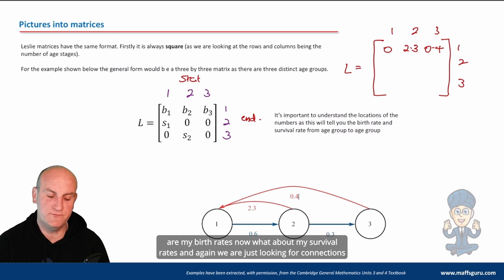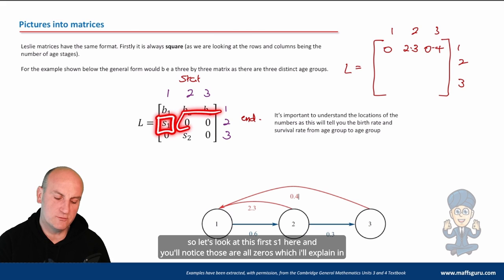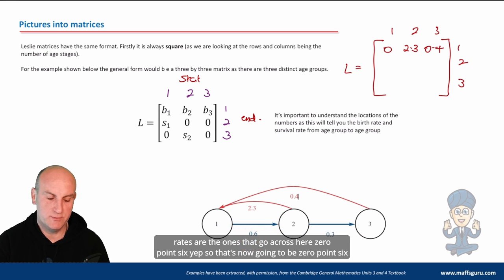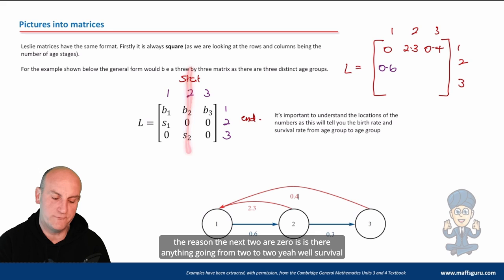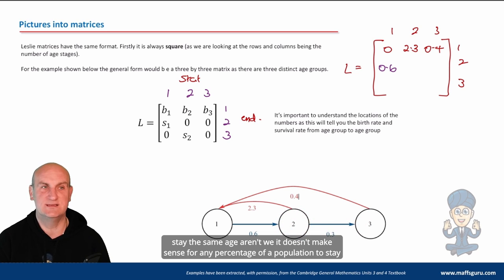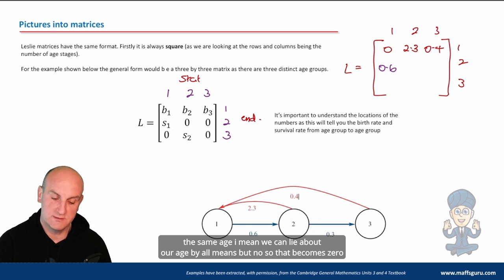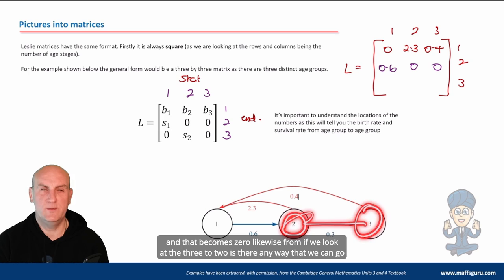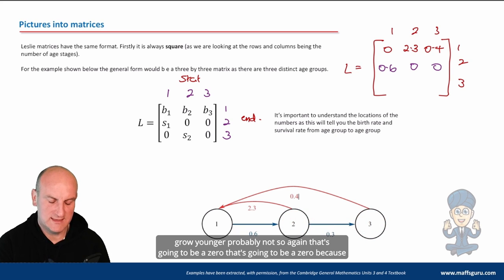Now what about my survival rates? And we are just looking for connections. So let's look at this first S1 here. And you'll notice those are all zeros, which I'll explain in a moment. From 1 to 2. Is there a connection from 1 to 2 in survival? Well, the survival rates are the ones that go across here. 0.6. So that's now going to be 0.6. The reason the next two are 0 is, is there anything going from 2 to 2? Well, survival rates, we're always going to pass from one age group into another. We're not going to basically stay the same age, are we? It doesn't make sense for any percentage of a population to stay the same age. I mean, we can lie about our age by all means, but no. So that becomes 0 and that becomes 0. Likewise, if we look at the 3 to 2, is there any way that we can grow younger? Probably not. So that's going to be a 0.